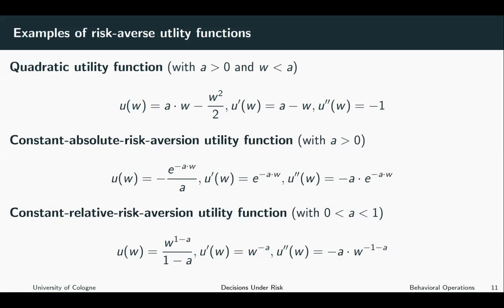There is some evidence that CRRA is likely the most relevant class of risk averse utility functions, as there is evidence that people become less risk averse as they grow richer, and so it is incorporated in many models. However, all three of these utility functions can come in handy if you want to analyze the influence of risk aversion in various settings.